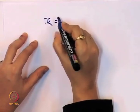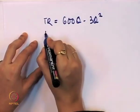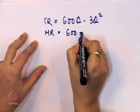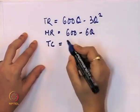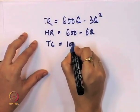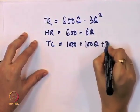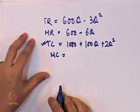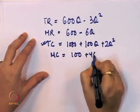Let us take a total revenue function: TR equals 600Q minus 3Q². Marginal revenue is the first order derivative, which gives 600 minus 6Q. Then we take a total cost function: TC equals 1000 plus 100Q plus 2Q². The marginal cost function is the first order derivative of TC, which gives 100 plus 4Q.